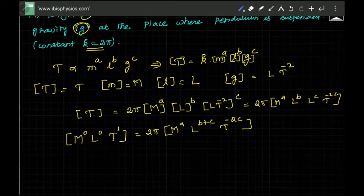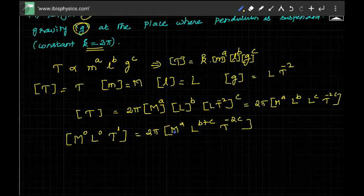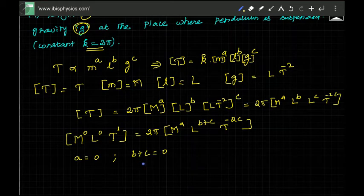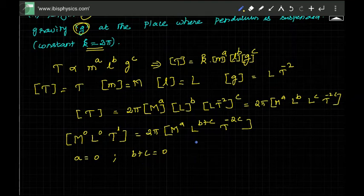When the left hand side must be equal to right hand side, powers are also supposed to be equal. M^a lies on the right hand side, M^0 is here, so a equal to 0. On the right hand side L is b plus c. On the left hand side it is 0. That means b equal to minus c or c is equal to minus b.